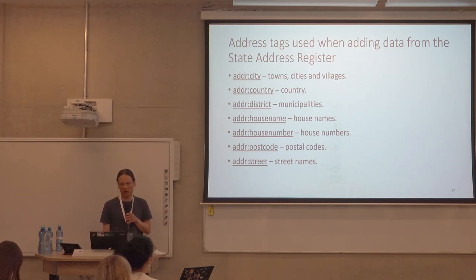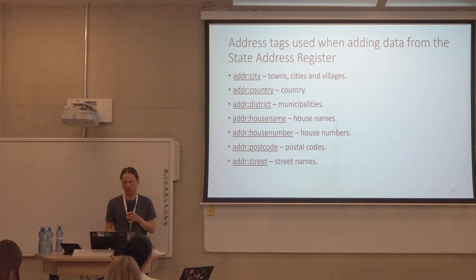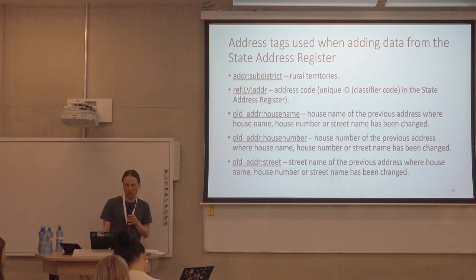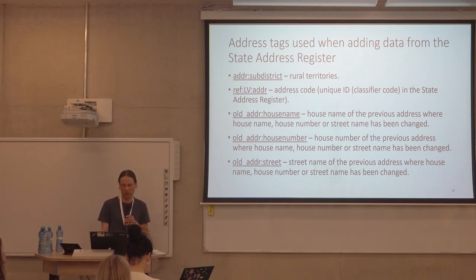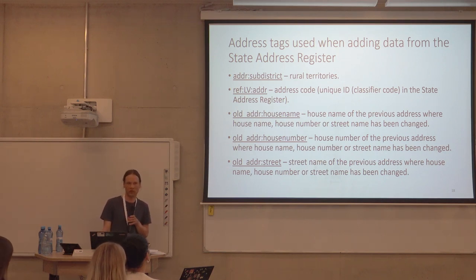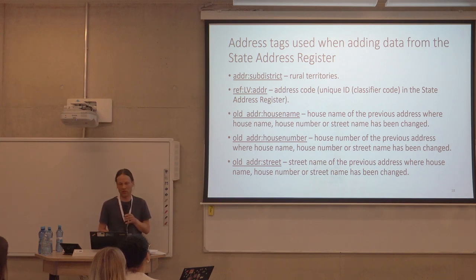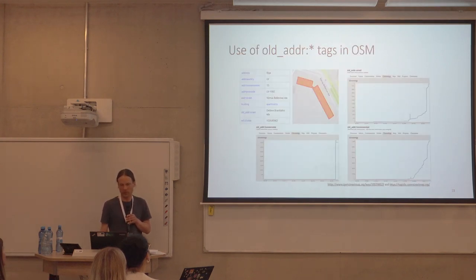The tags used by the bot are defined: city, country, municipality, a logistic tag, house names, house numbers, postal codes, street names, rural territories, and also a tag for address code — which is a new one — linking with a unique identifier in the state address register. This is important because if you do any import, using the original tags from the data source captures a lot of context. We also added the previous address: previous address house names, house numbers, and street.